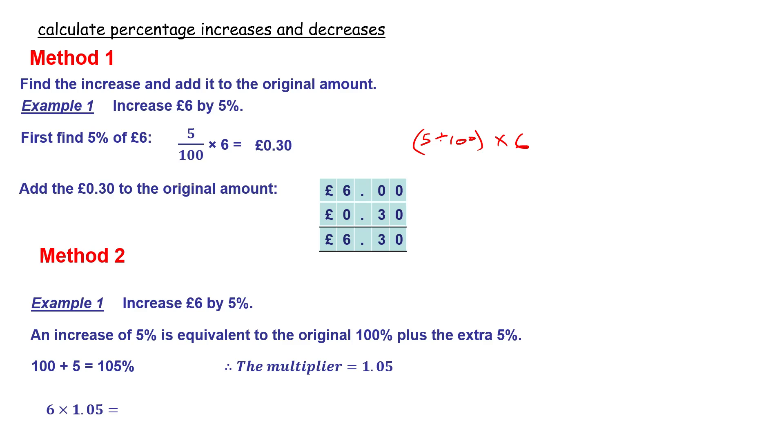And you get exactly the same amount, six pounds 30. Much quicker than the first method. What I want you to do now is hit pause, copy both methods down into your book. When you're ready to move on, hit play again.